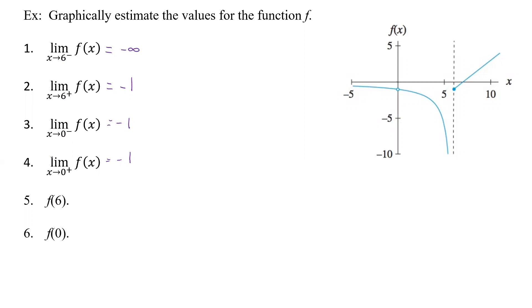We can also estimate the value of f(6) and f(0). f(6) is negative 1. But f(0) does not exist — there's no point there. If that had been a filled-in circle, then the limit would be that actual number, negative 1. But because we have an open circle, f(0) does not exist.